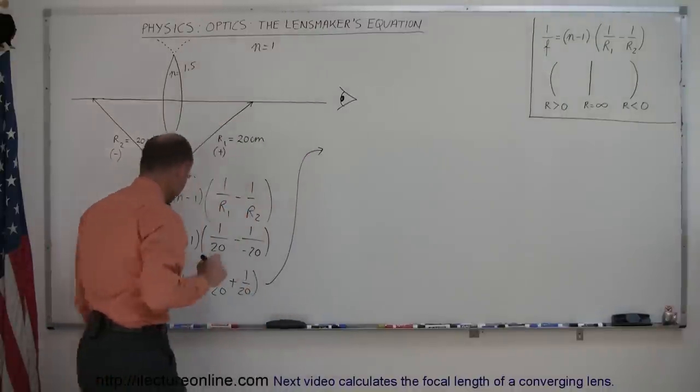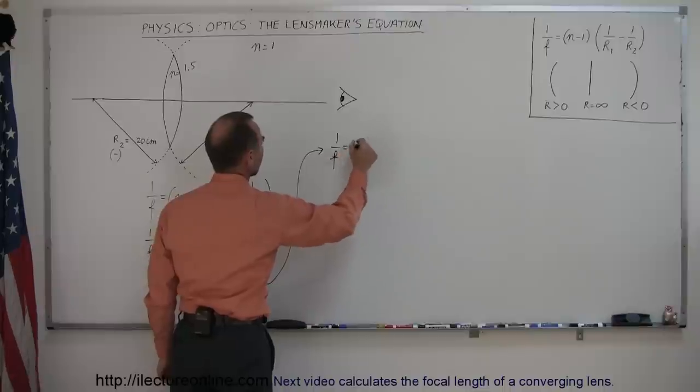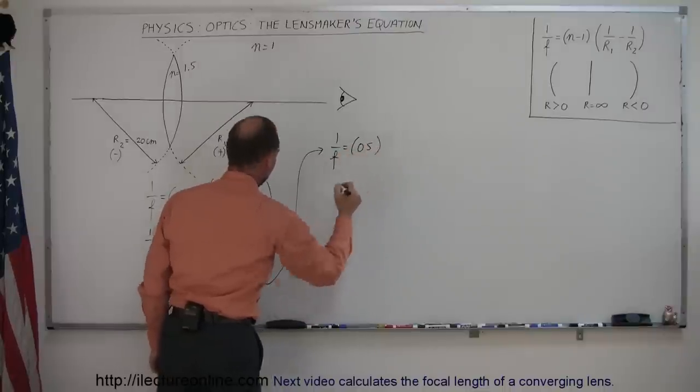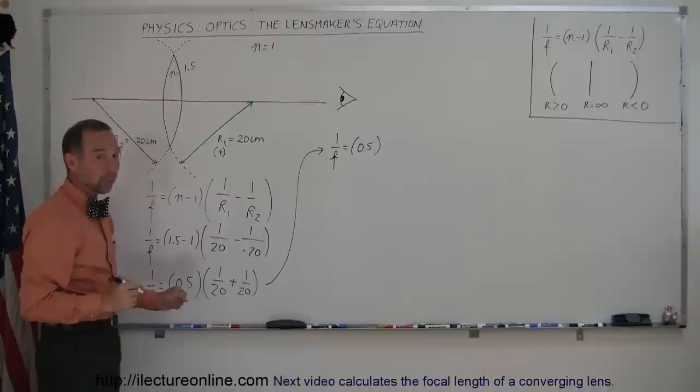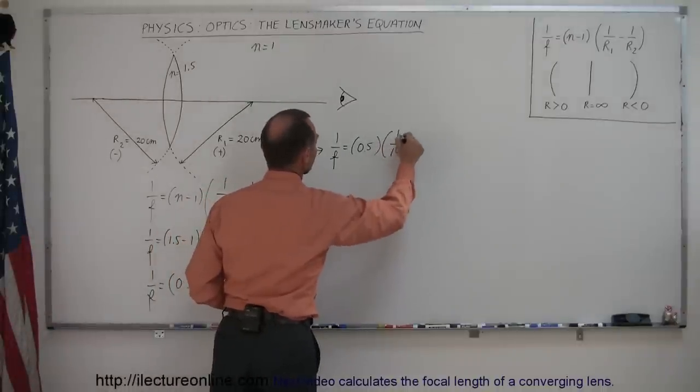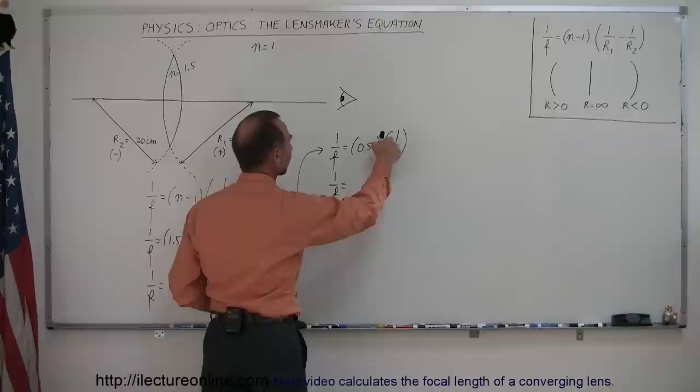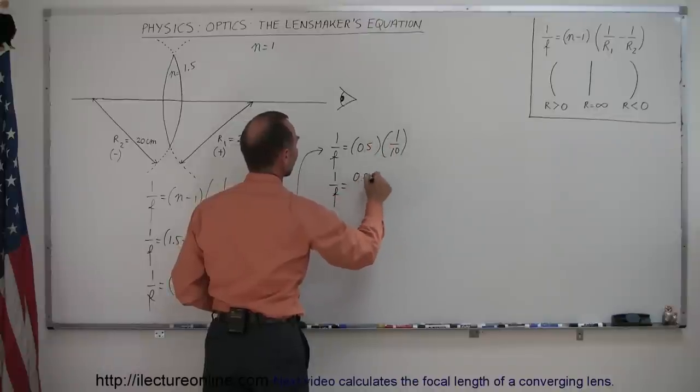Continuing on over here. So we have 1 over F is equal to 0.5 times 1 20th plus 1 20th. That's the same as 2 20th or 1 over 10.